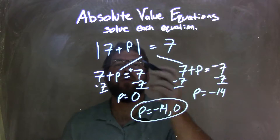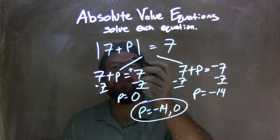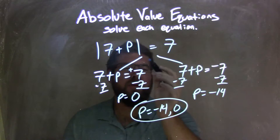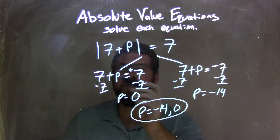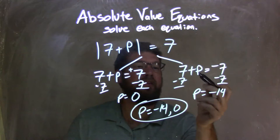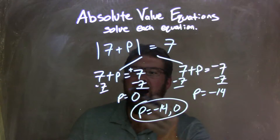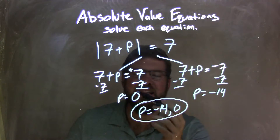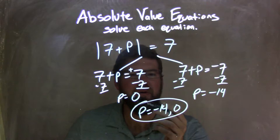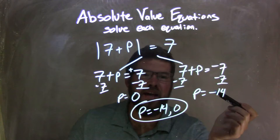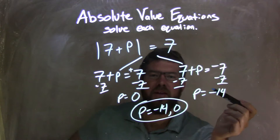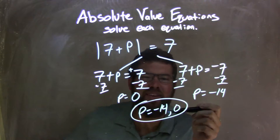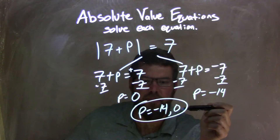Let's recap. We start with the absolute value of 7 plus P equals 7. Once the absolute value is isolated, I can break it apart into two equations: 7 plus P equals positive 7, and 7 plus P equals negative 7. I then solve each equation individually, giving me P equals 0 and P equals negative 14. Writing from smallest to largest, my final answer is P equals negative 14 and 0.